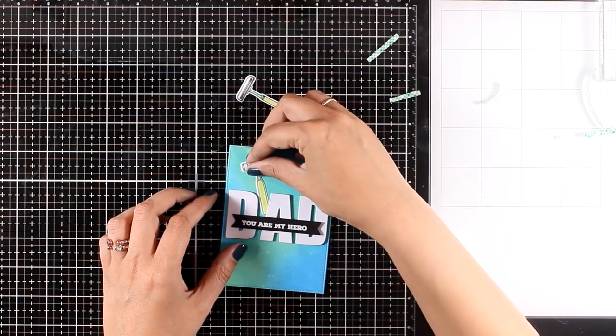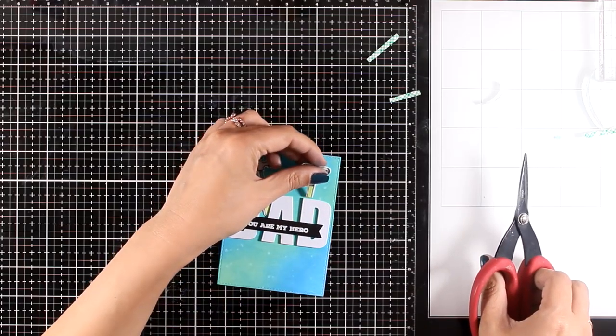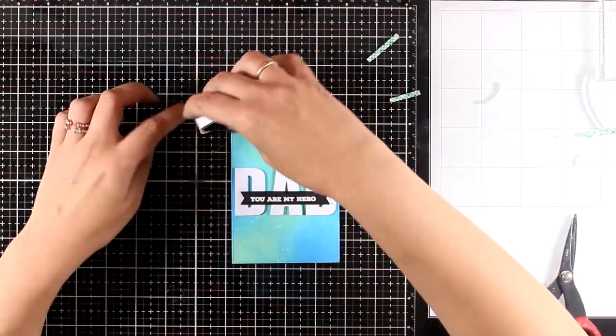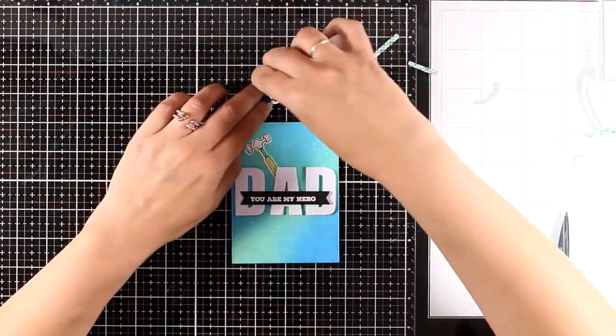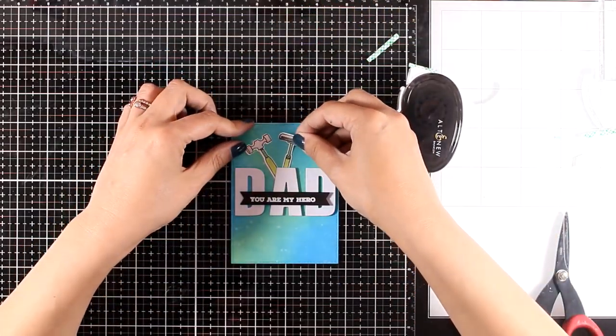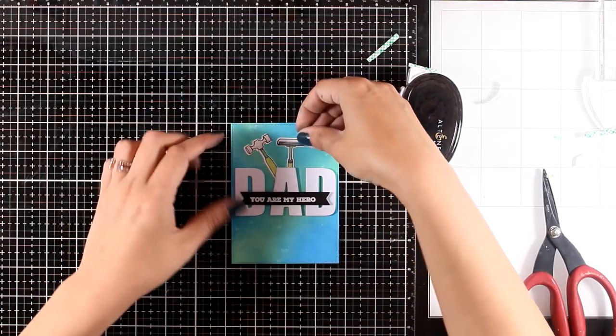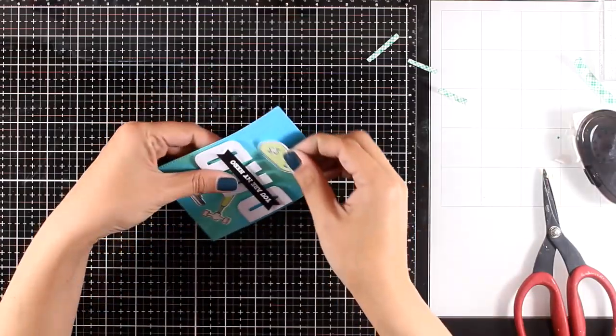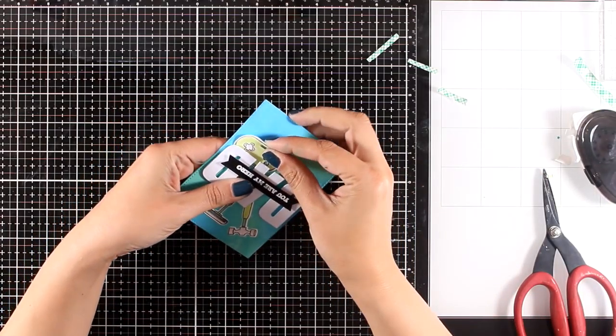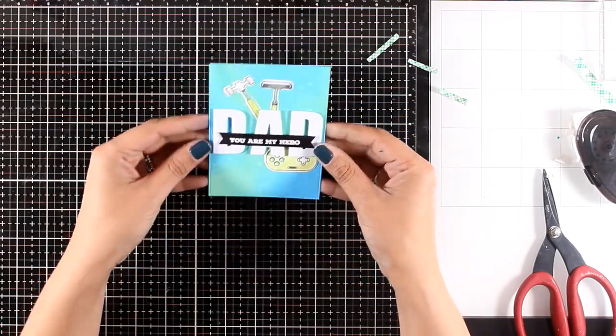I was debating with myself whether I wanted to stick this black label underneath the word DAD or on top. Both look great, but I finally decided to go with the one on top. Now I'm going to embellish the letters by adding those images that I've already cut out. I have one more cutout which I'm going to tuck in just underneath the letters, and my panel is ready.